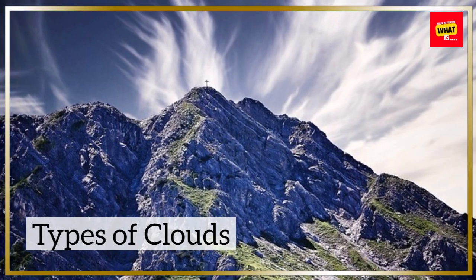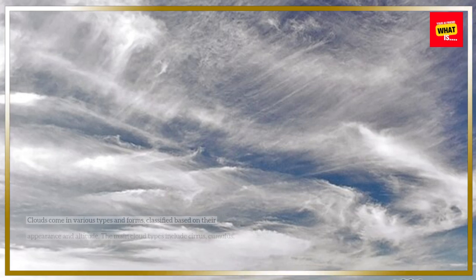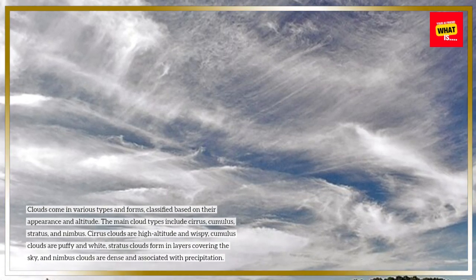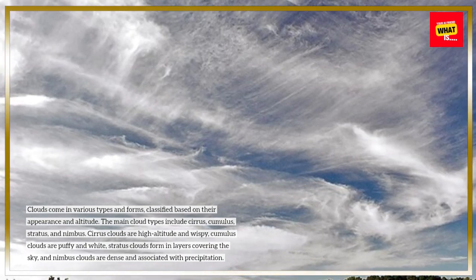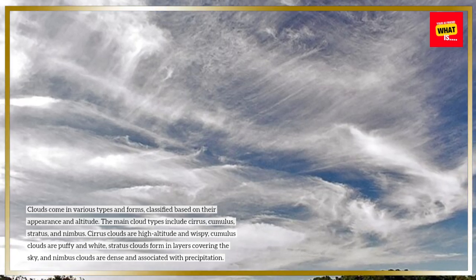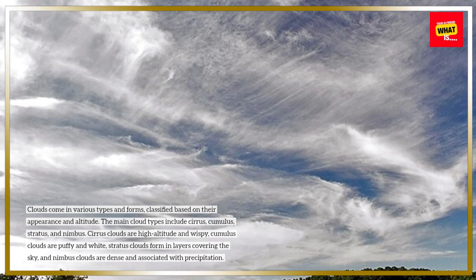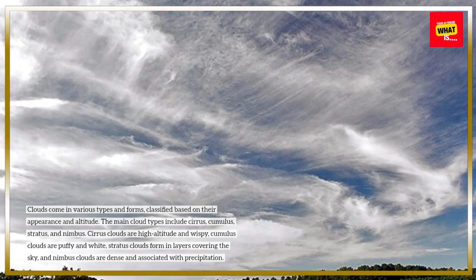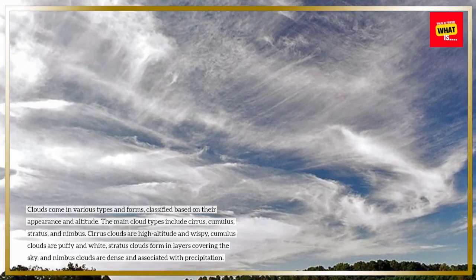Types of Clouds. Clouds come in various types and forms, classified based on their appearance and altitude. The main cloud types include cirrus, cumulus, stratus, and nimbus. Cirrus clouds are high altitude and wispy, cumulus clouds are puffy and white, stratus clouds form in layers covering the sky, and nimbus clouds are dense and associated with precipitation.